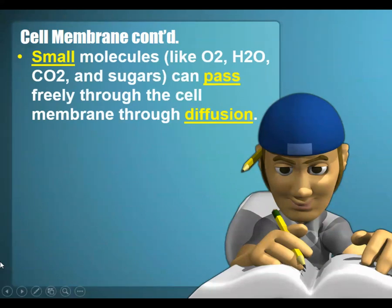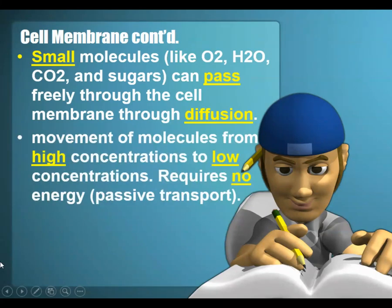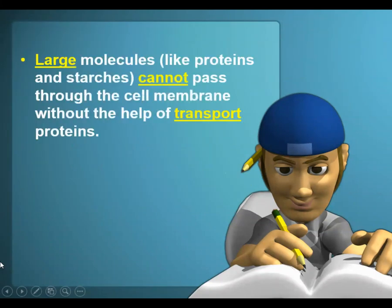Small molecules are able to pass through the cell membrane easily through diffusion, moving from high to low concentration. Things like water, oxygen, carbon dioxide, and small sugars can pass through. This movement from high to low concentration defines diffusion, and it does not require energy, so we call it passive transport. Larger molecules like proteins and starches cannot be transported through without the help of transport proteins or active transport.